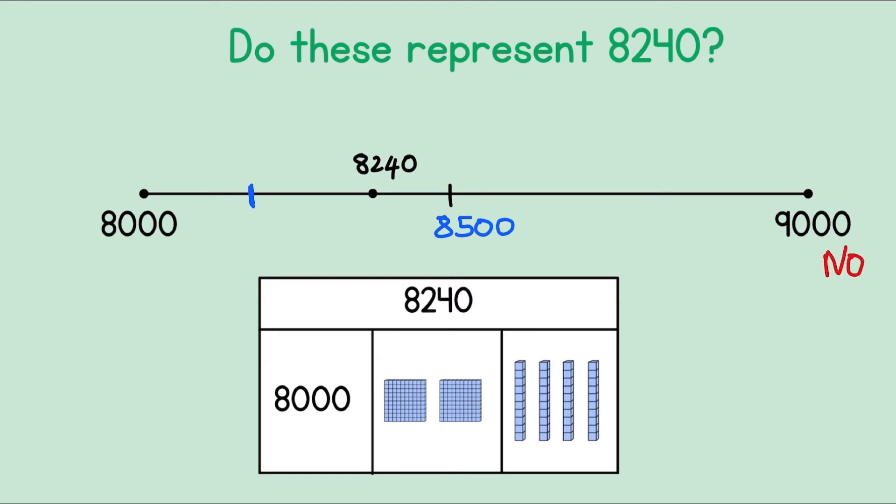Let's check the other one. Here we have 8,000. These are our hundred blocks. So 100, 200. These are our 10 blocks. So 10, 20, 30, 40. Let's put it together. 8,240. So this one is correct.